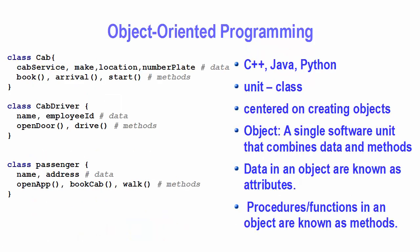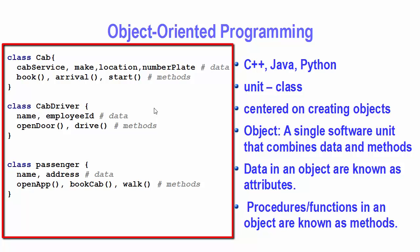In object-oriented programming languages like C++, Java, or Python, the basic unit is a class. Taking the same cab service example, using object-oriented thinking — which depends on the creation of objects — we can create different objects. For example, for a cab we can create a class called Cab, then a class for cab driver, and a third class for a passenger.